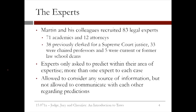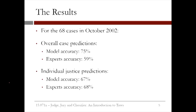When making their predictions, the experts were allowed to consider any source of information, but they were not allowed to communicate with each other. For the 68 cases in October 2002, predictions were made, and at the end of the month the results were computed. For predicting the overall decision made by the Supreme Court, the models had an accuracy of 75%, while the experts only had an accuracy of 59% — a significant edge for the models.